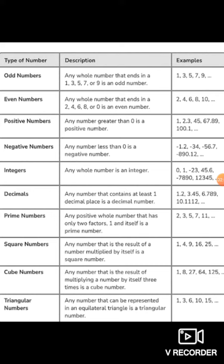100. Cube numbers. Any number which is a result of multiplying a number by itself 3 times is a cube number. Like 1, 8, 27, 64, 125.